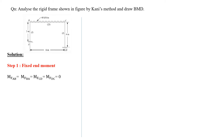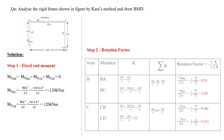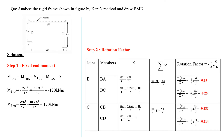For span BC with UDL throughout, the fixed end moment M of BC equals minus WL squared by 12, and M of CB equals WL squared by 12. Substituting values and simplifying gives the fixed end moments. Then we find the rotation factor, computing it for all joints and members the same way as for regular frames.